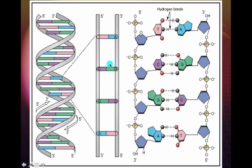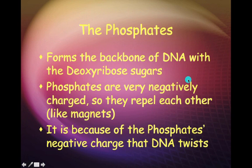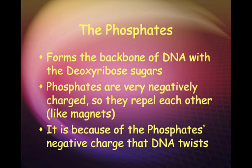If you zoom in on one piece of the ladder, you can see each individual nucleotide: the phosphate, the sugar, the nitrogen base — repeating over and over again, because these are the monomers that make up the polymer. The phosphates form the backbone of DNA. Because these phosphates are negatively charged, they repel each other, and that repulsion is actually what causes the twisting of the DNA. As one phosphate repels another, they turn into that spiral staircase shape.